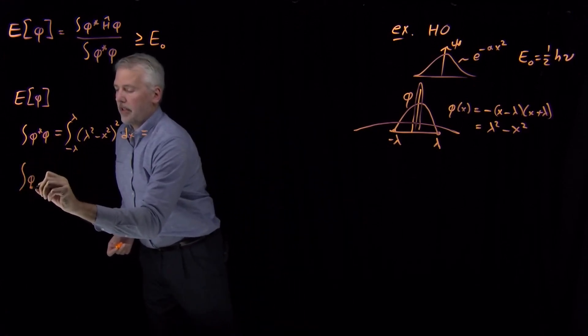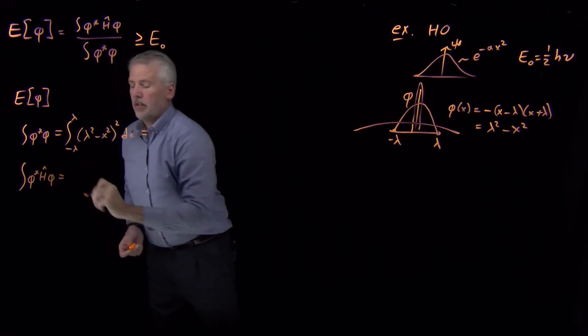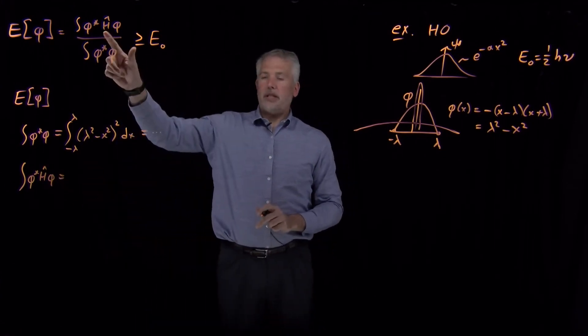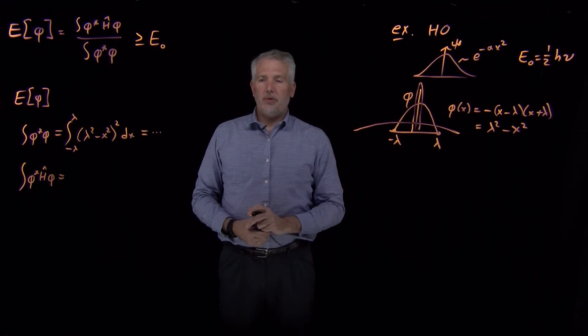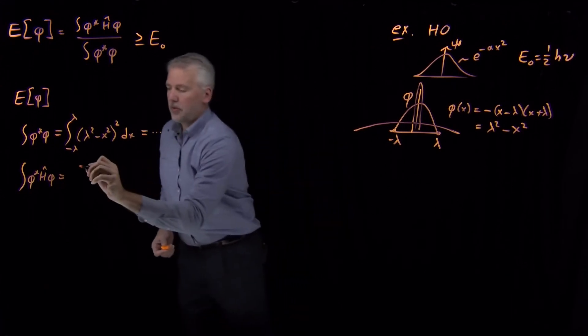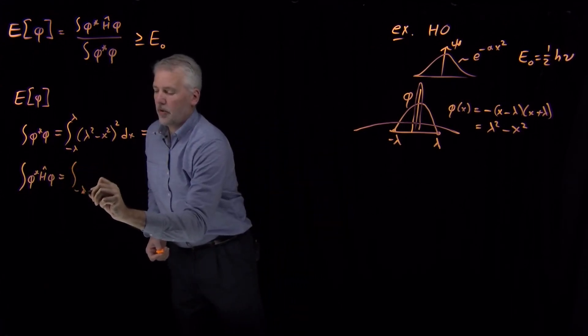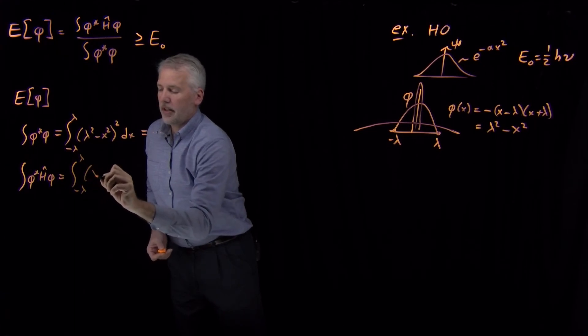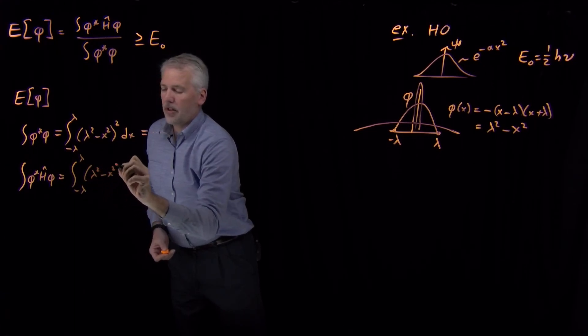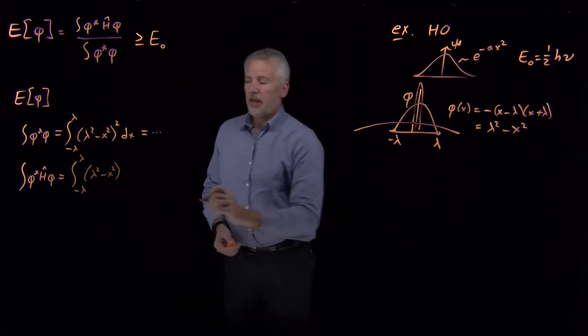If we do the same thing for the numerator, sandwiching the Hamiltonian in between these two versions of the trial wave function, just to write down what that would look like, the integral we would be solving.